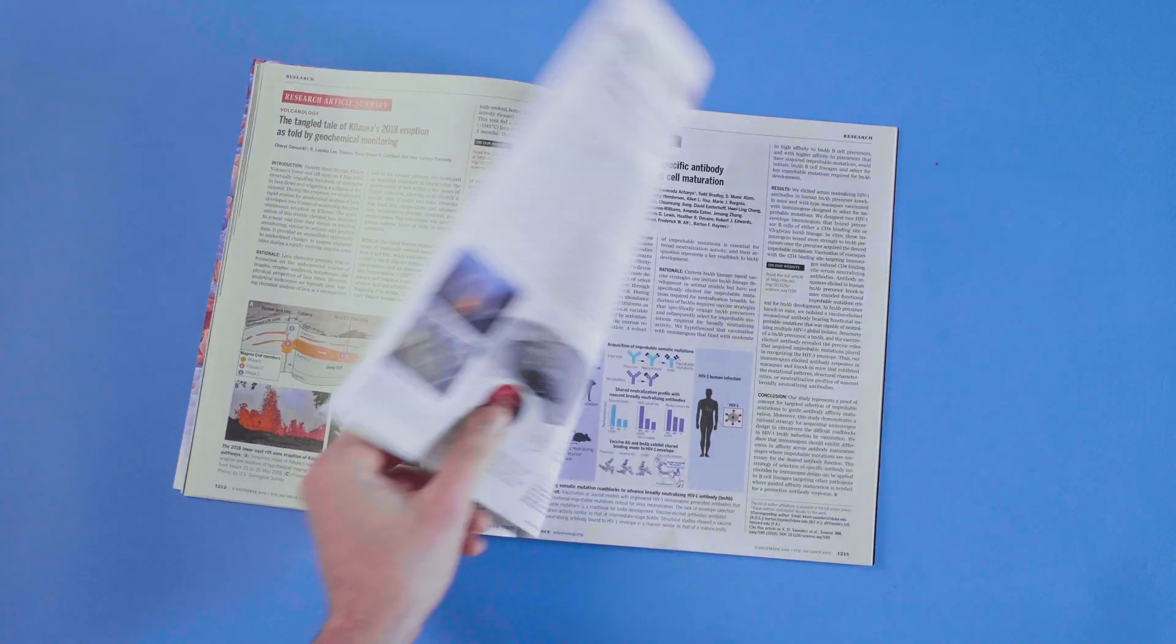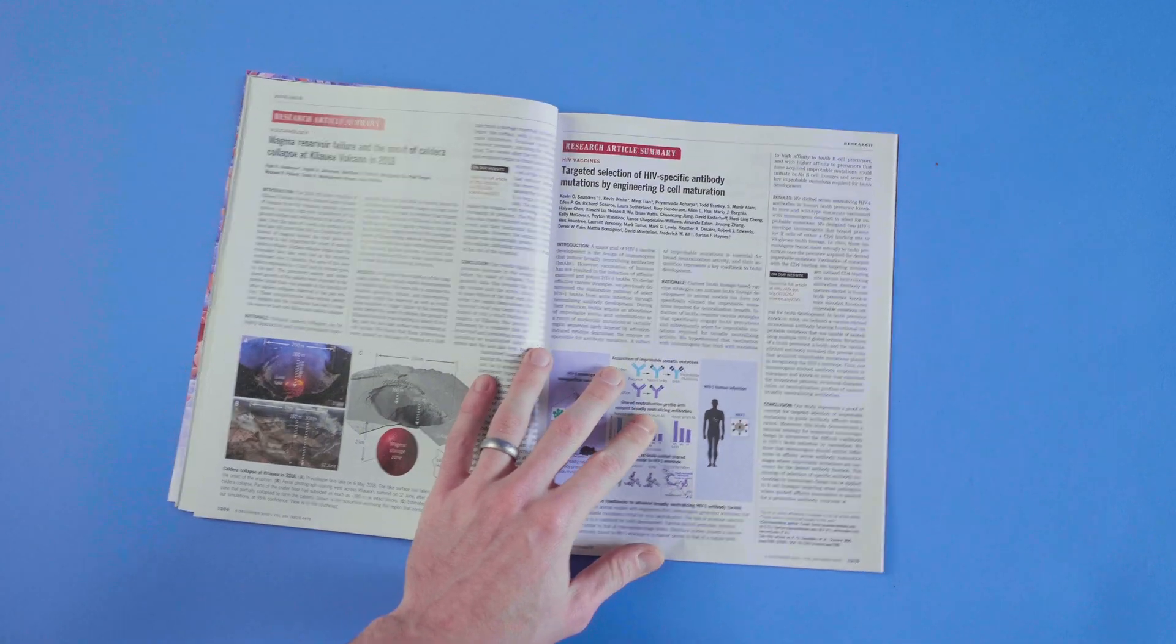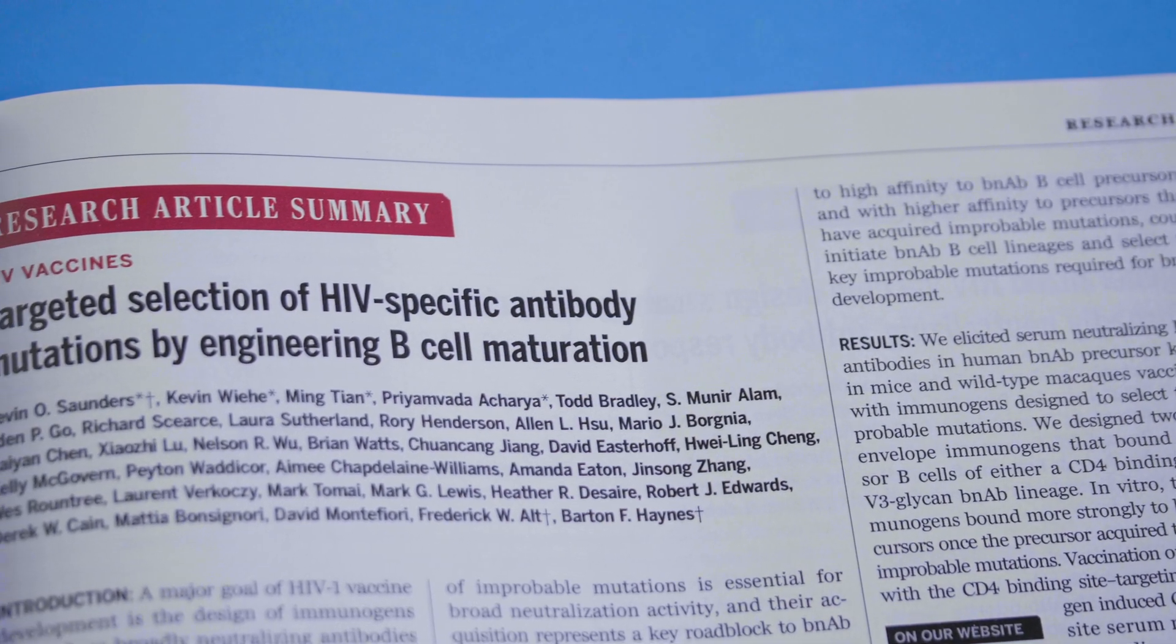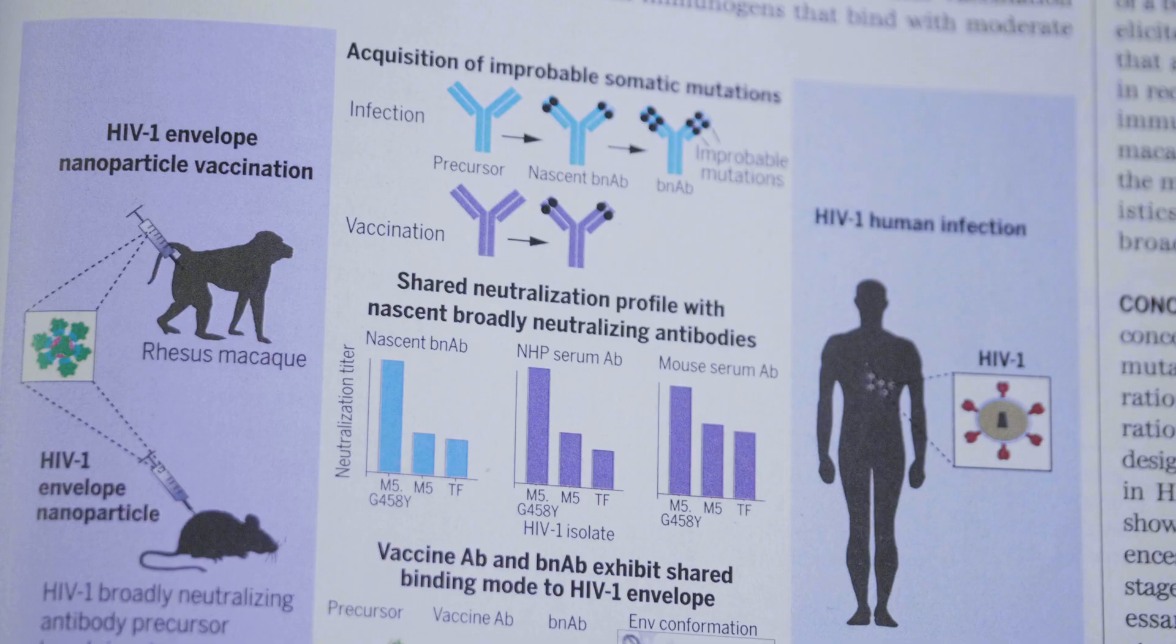In December 2019 we published a study in Science that showed that we were able to design vaccine components that could actually carry us through the first initial stages of developing an effective HIV vaccine.